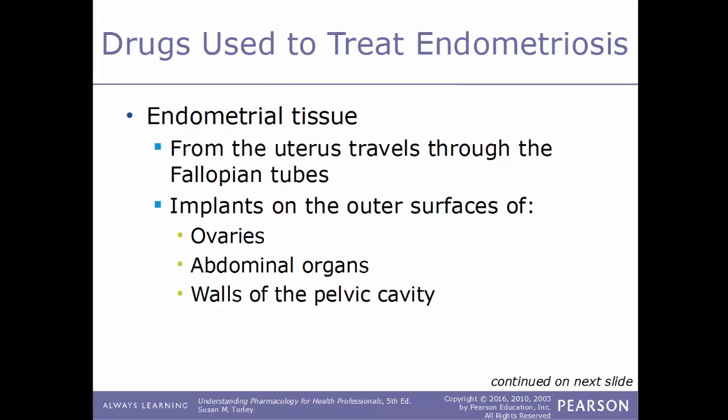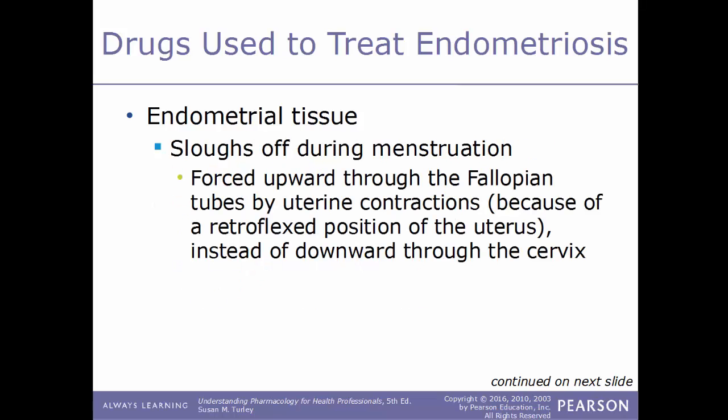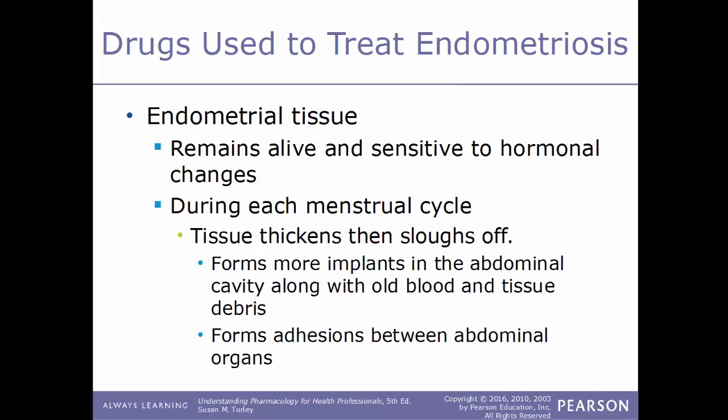Drugs used to treat endometriosis: endometrial tissue travels from the uterus through the fallopian tubes and implants on the outer surfaces of the ovaries, abdominal organs, and walls of the pelvic cavity. During menstruation, this tissue is forced upward through the fallopian tubes by uterine contractions due to the retroflexed position of the uterus instead of going down through the cervix. This tissue remains alive and sensitive to hormonal changes. During each menstrual cycle, the tissue thickens and then sloughs off, forming more implants in the abdominal cavity along with old blood and tissue debris, and can form adhesions between abdominal organs.